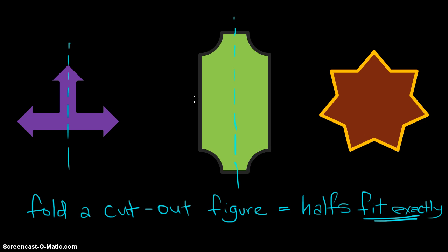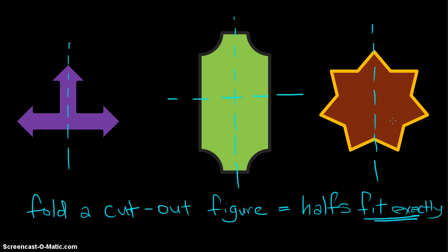I actually have one more line of symmetry here. When I fold this way down — the top folds down — it also forms exactly the same figure. And as for this figure, this line of symmetry is here. So this is the line of symmetry.